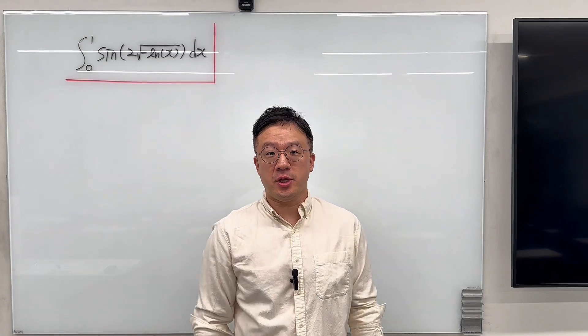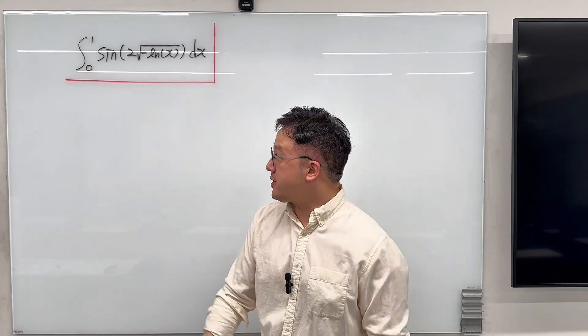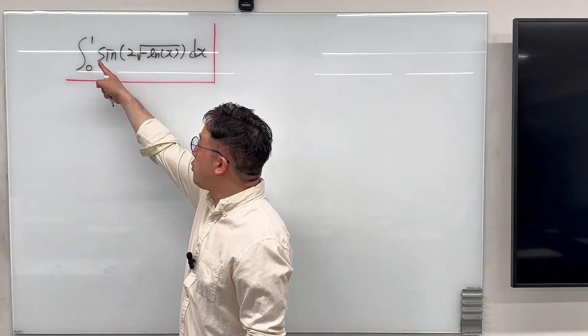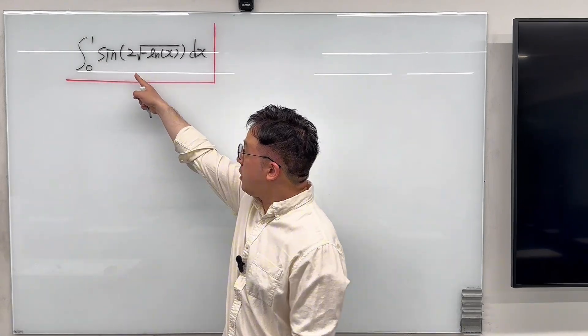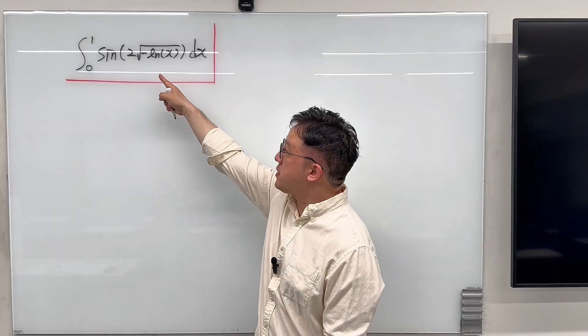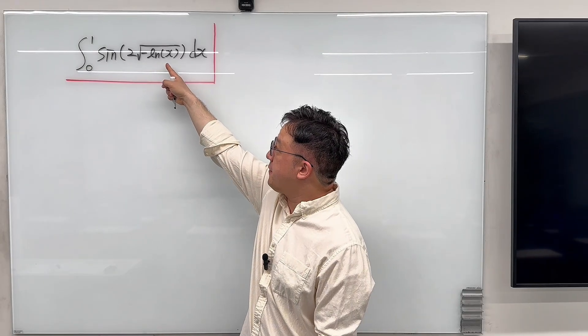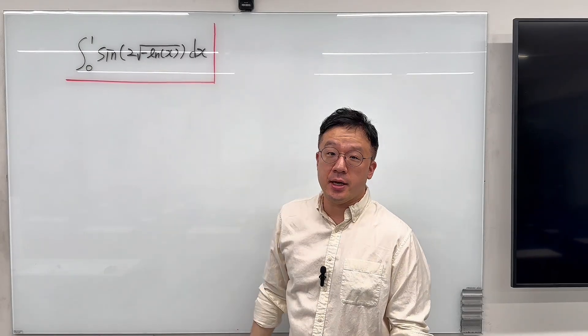Okay, here's the question. The question is the value of this integral from 0 to 1 of sine of 2 times the square root of negative ln of x, dx.